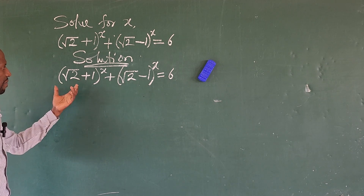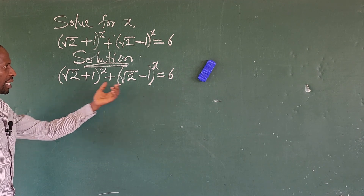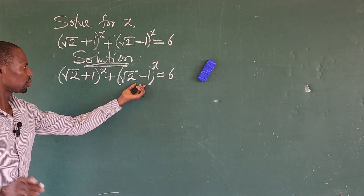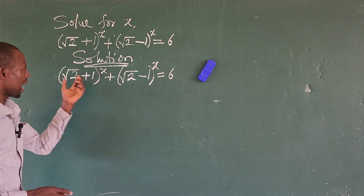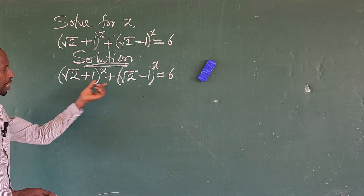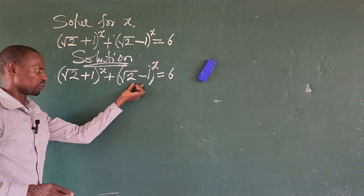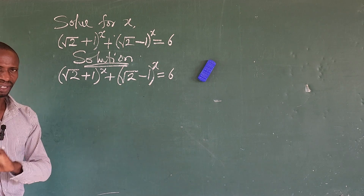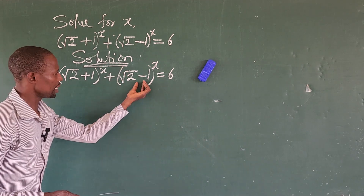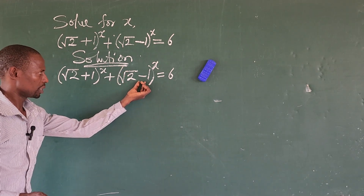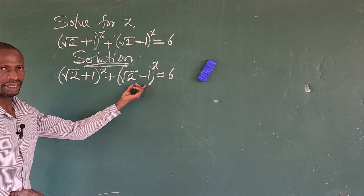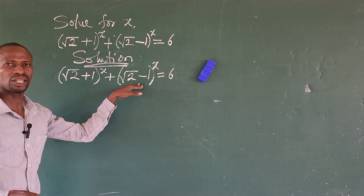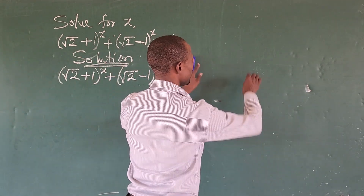We can bring in another alphabet to represent each term, but that will give us a bigger challenge. So what I would do here is make the quantity inside one bracket match the other — I want to change (√2 - 1) to relate to (√2 + 1). To achieve that, I will multiply this quantity by its conjugate.